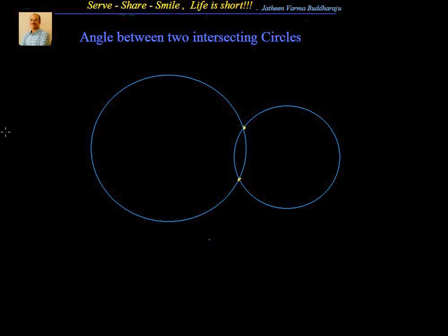Now, what is actually the angle between two intersecting circles? The angle between two intersecting circles is nothing but the angle between the common tangent to those two circles — the angle between the tangents drawn at the point of intersection where these two circles are meeting. So let's say these two points are the points of intersection; you draw the tangents at both of them, and that angle between them is the angle between two intersecting circles.